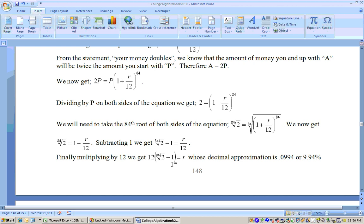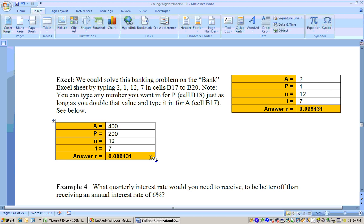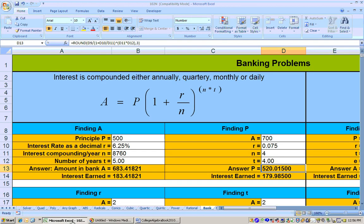Now, you could do this on a calculator, a good calculator. You probably would want to do the inside first. Take 2 and raise it to the 1/84th power, putting the 1/84th in parentheses. Subtract 1 from that answer, and then multiply by 12. Now, the easier way to do this is to use the Excel sheet, and we're finding out the interest rate, and what interest rate would you need for your money to double in seven years compounded monthly. So let's go ahead and do that.